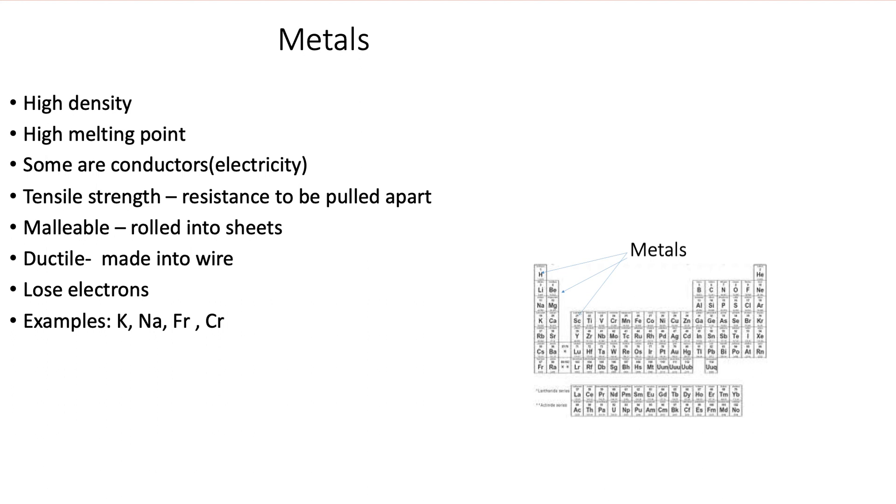Metals have high density, high melting point. Some are conductors of electricity. They have tensile strength. That means they have a resistance to be pulled apart. They're malleable. They're rolled in the sheets. It's ductile, made into wires. They lose electrons. And we'll talk about that more later in this unit. And some examples: potassium, sodium, francium, and chromium.